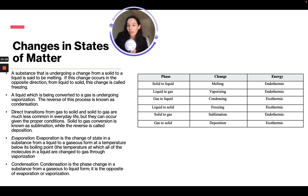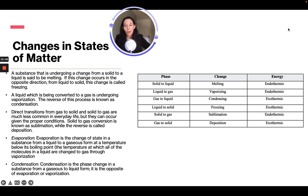Evaporation is the change of state from liquid to gaseous form at a temperature below the boiling point — the boiling point being the temperature at which all molecules in a liquid change to gas through vaporization. Condensation is the phase change from gaseous to liquid form and is the opposite of evaporation or vaporization.